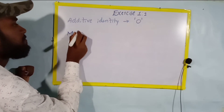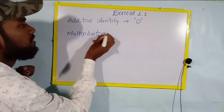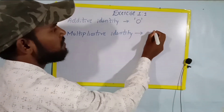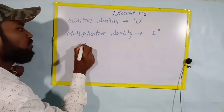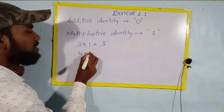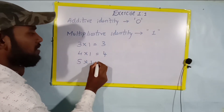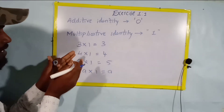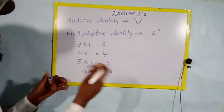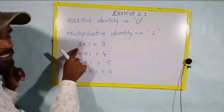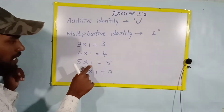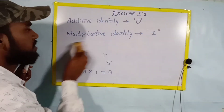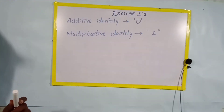Now multiplicative identity. Multiplicative identity is one. See here: three into one equals three, four into one equals four, five into one equals five, a into one equals a. If you multiply one by any number, the answer is that number only — there is no change. So one is called the multiplicative identity.